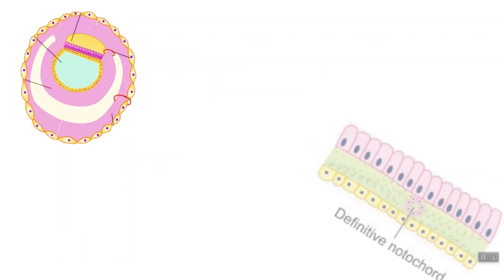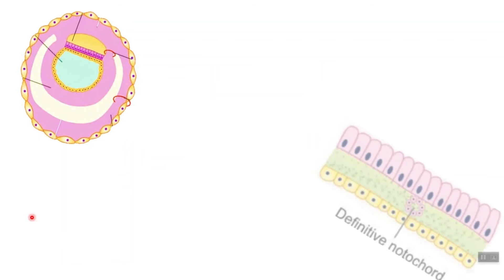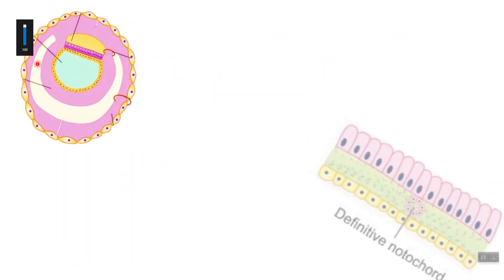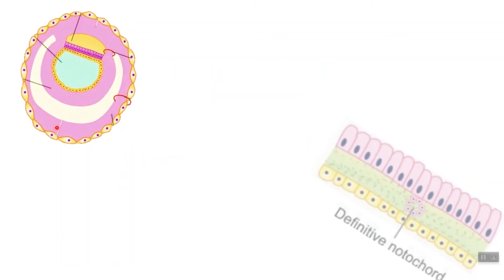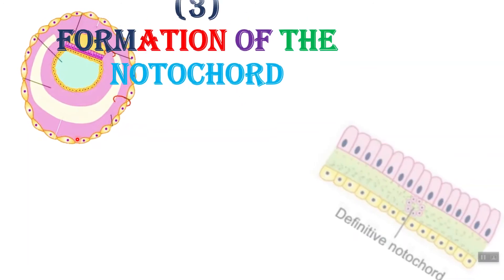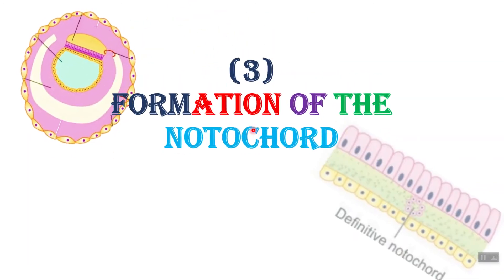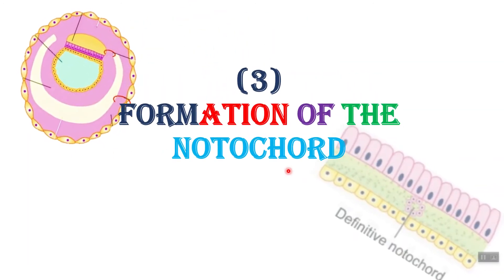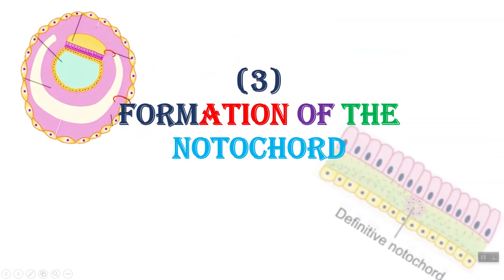In the last section we learned about the formation of the extraembryonic coelom as well as the extraembryonic mesoderm. Today we will be learning about the formation of the definitive notochord. So let's get started.